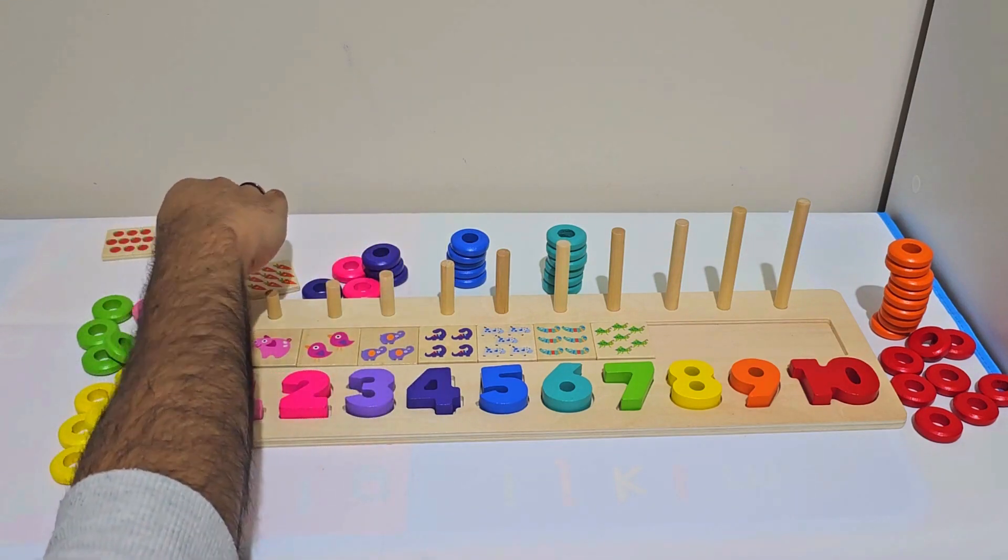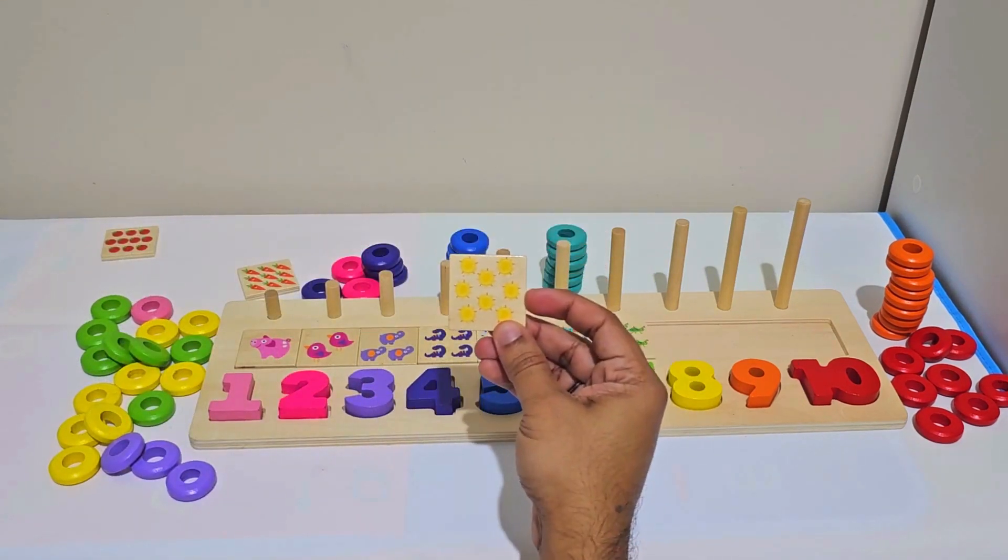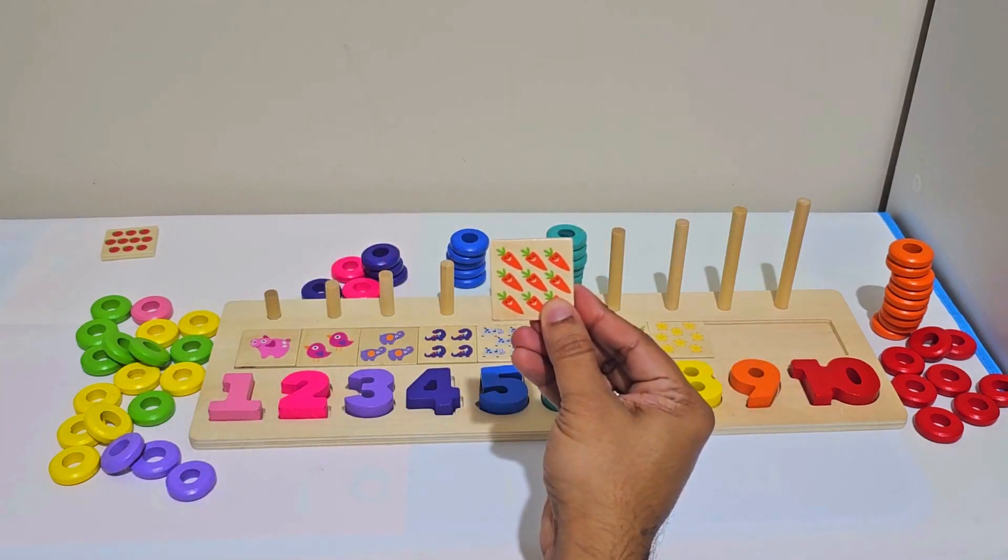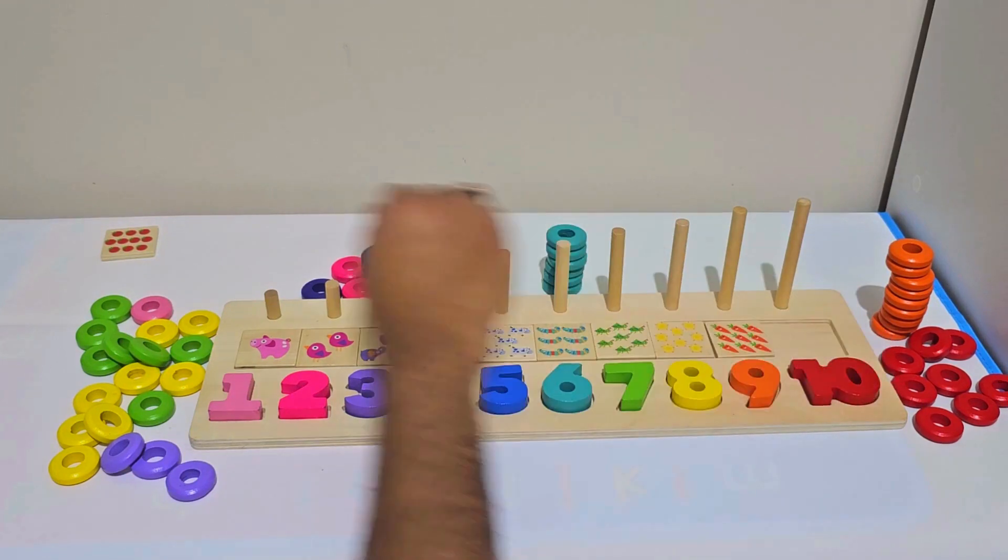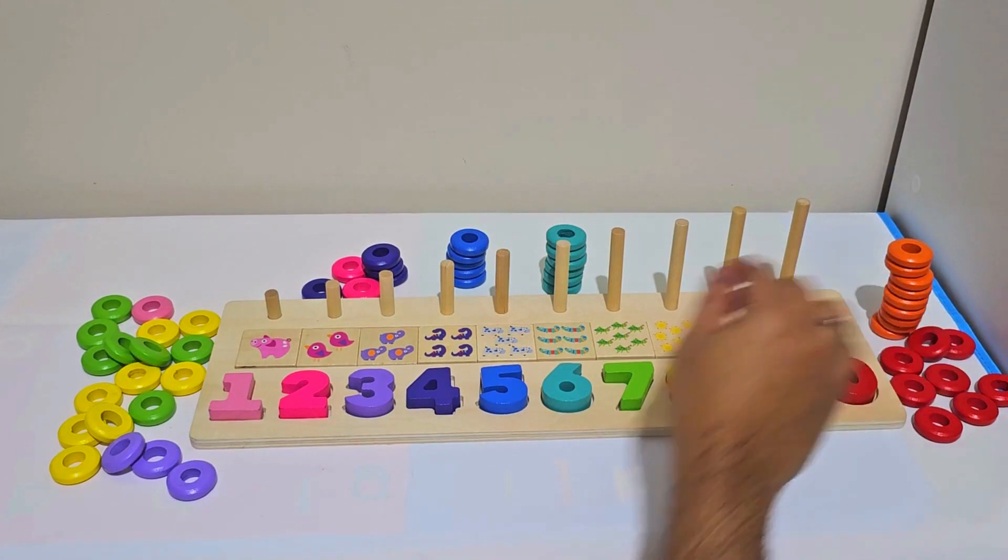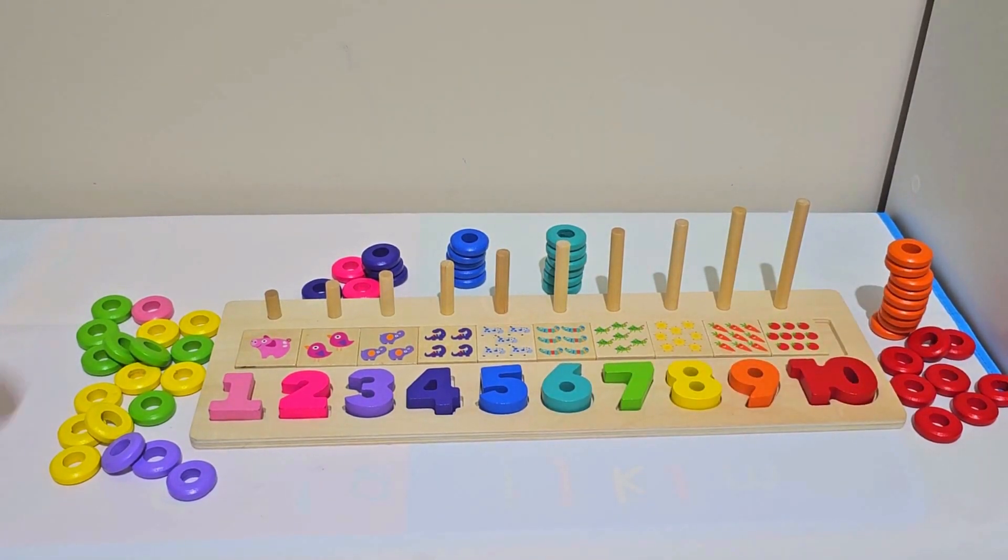For number 8, we have eight suns. For number 9, we have nine orange carrots. And for number 10, we have ten red tomatoes.